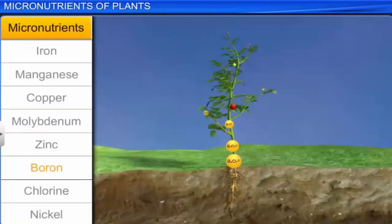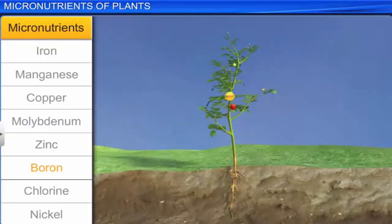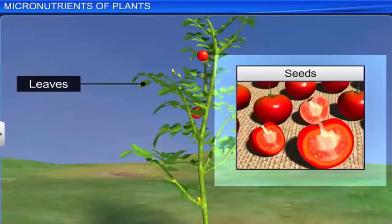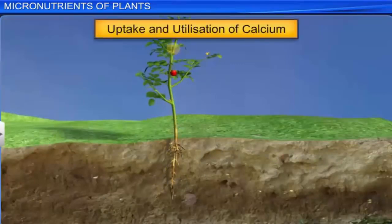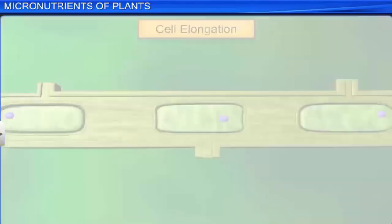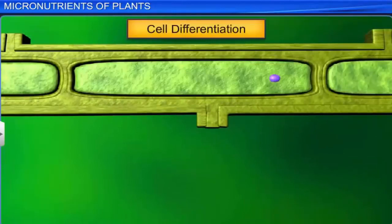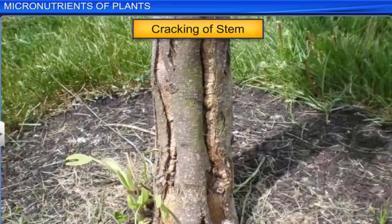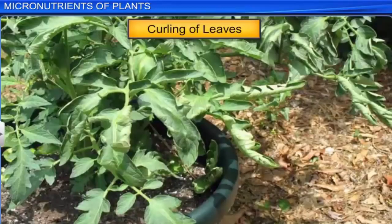Boron is absorbed by plants from the soil. Plants require boron in its leaves and seeds. It is required for the uptake and utilization of calcium, pollen germination, cell elongation, cell differentiation, and carbohydrate translocation. Deficiency symptoms of boron include cracking of stem and curling of leaves.